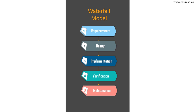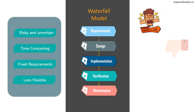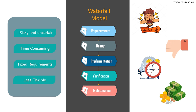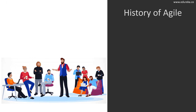The waterfall model had many disadvantages. It involved a lot of risk and uncertainty — teams had to stick to requirements set at the beginning and could not make changes along the way. It was not suitable for a rapidly changing environment, and following a fixed plan could prove troublesome because projects could take years to finish. Frustrated by this, software development teams began changing their approach throughout the 1990s, which turned into the agile mindset we practice today.